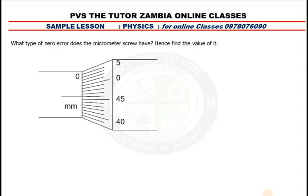All right ladies and gentlemen, another demo lesson here. We are answering a question in physics. Don't forget for all nine classes we are available and can benefit all these at a very affordable price. The question is: what type of zero error does the micrometer screw have? Hence, find the value of it. Now, how do we know which type of error a micrometer has?